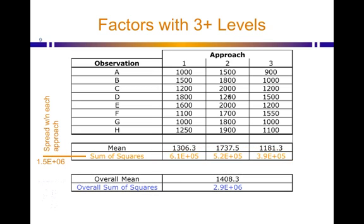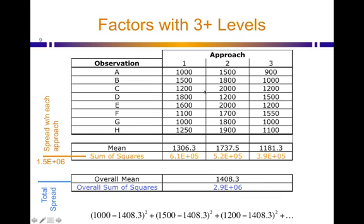The other one that we'll talk about now is the overall sum of squares. This is where you get an overall mean value—in this case, of all 24 points, the overall mean is 1408.3—and then you follow the same type of calculations. Take every one of the 24 data points individually, subtract it from the overall mean, and then square it.